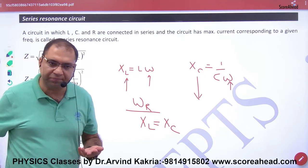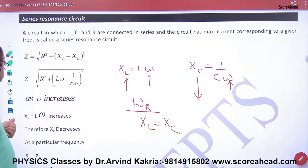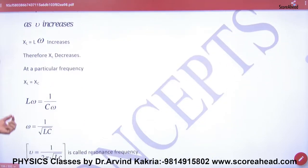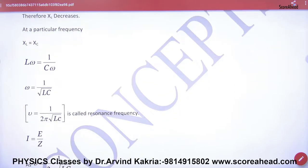Resonance means when XL equals XC. So Lω = 1/(Cω), which gives ω² = 1/(LC), therefore ω = 1/√(LC). Since ω = 2πf, the frequency is f = 1/(2π√LC). This is called the resonance frequency.